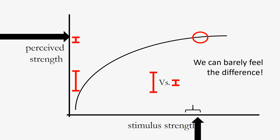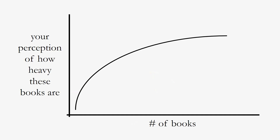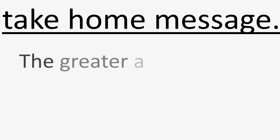Relating this back to our example: your perception of how heavy the books are is related to the number of books you're carrying. With fewer books, each additional one changes how much you feel the weight by quite a bit. But if you're starting out with a lot of books — like when Chad handed you that huge load — you don't detect each subsequent book nearly as much.